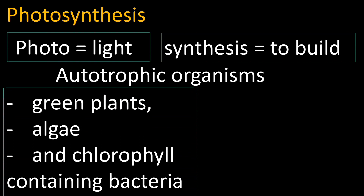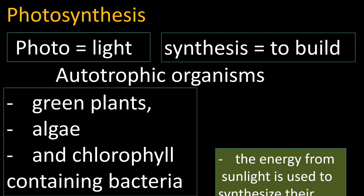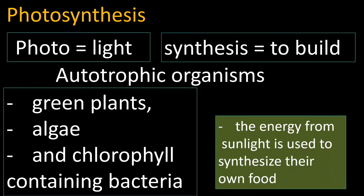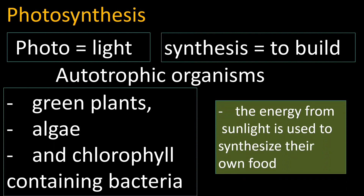Some bacteria have chlorophyll, so they are autotrophs. Autotrophs prepare their own food. They get energy from sunlight and use that sunlight energy to prepare their own food.